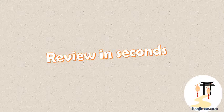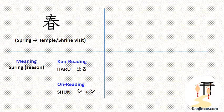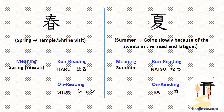Now let's review today's first two kanji figures once more. The first one is the spring kanji — we can remember it from a temple or shrine visit in spring. Its kun reading is Haru, remember the Hanami room of the temple. And the on reading is Shun, remember taking off shoes and boots before entering the temple. The second one is the summer kanji — you can see a tired, slowly going man in this figure. The kun reading is Natsu and the on reading is Ka, remember 'get in the car.'